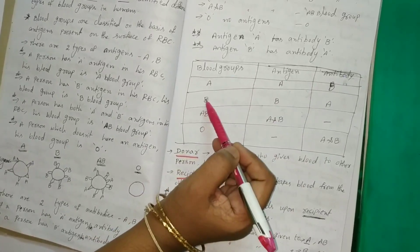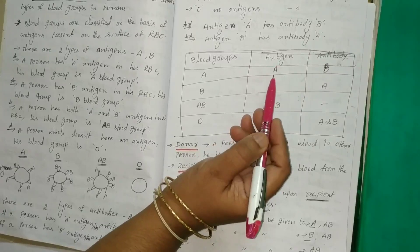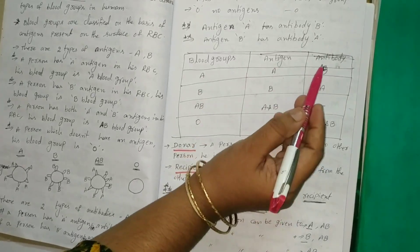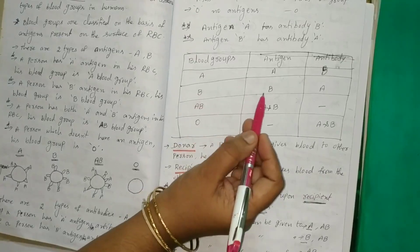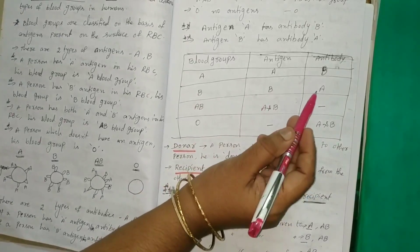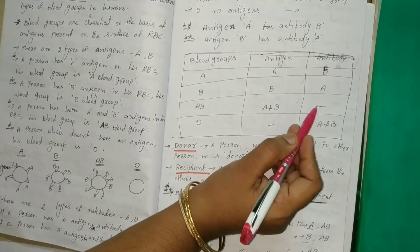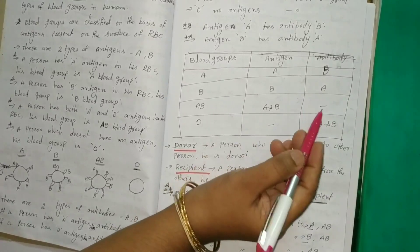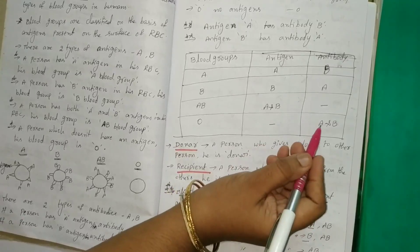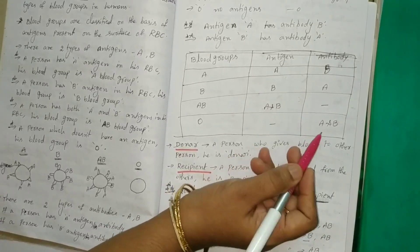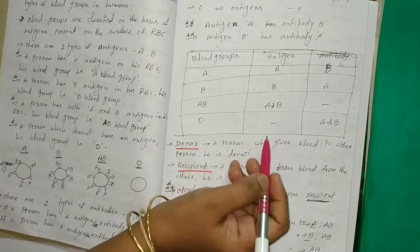In the A blood group, antigen is A and antibody is opposite — so antibody is B. In the B blood group, antigen is B and antibody is opposite — so antibody is A. In the AB blood group, antigen is A and B, but the antibody is nil — no antibodies. O blood group has no antigens, but has both A and B antibodies.